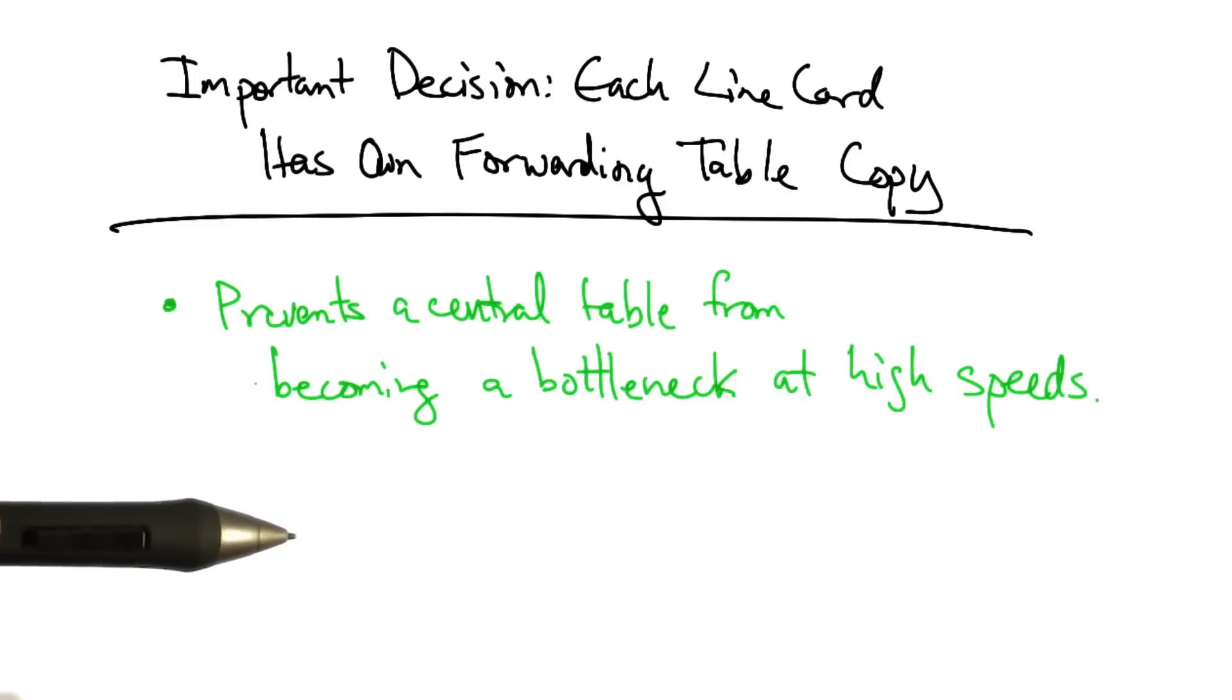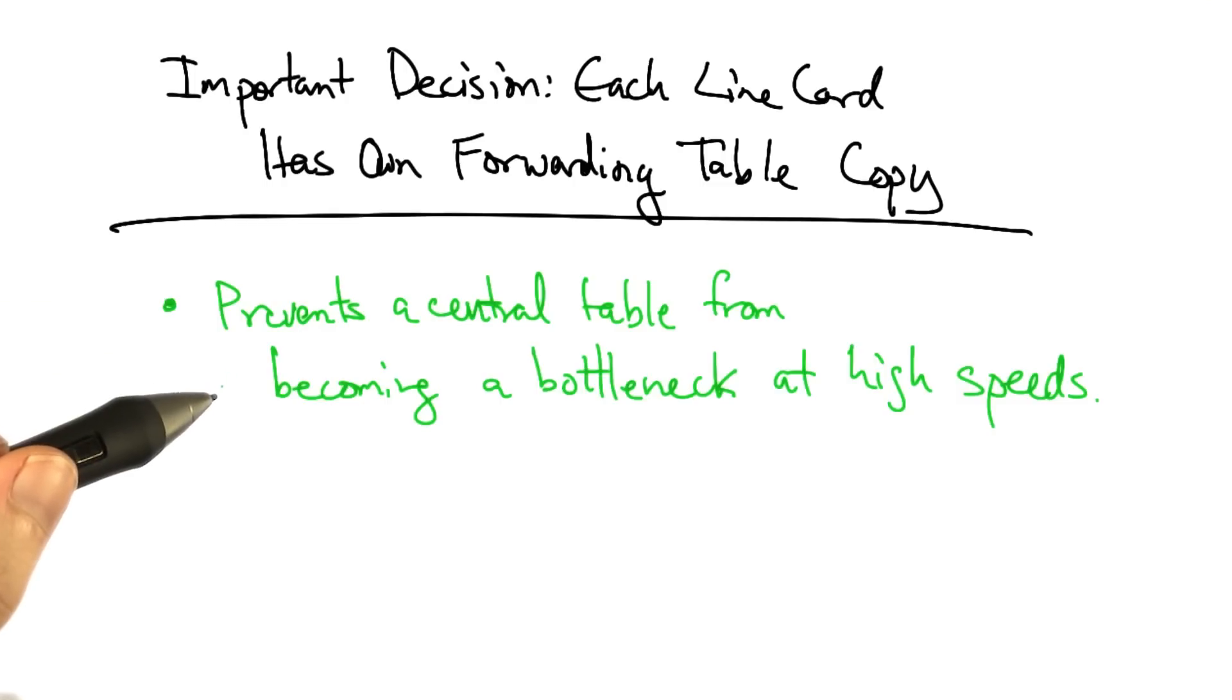Consider an alternative where the router has only one copy of the forwarding table. In that case, all of the line cards would need to be performing lookups on a central table, which involves communication across the backplane, as well as many more lookups against a central table.